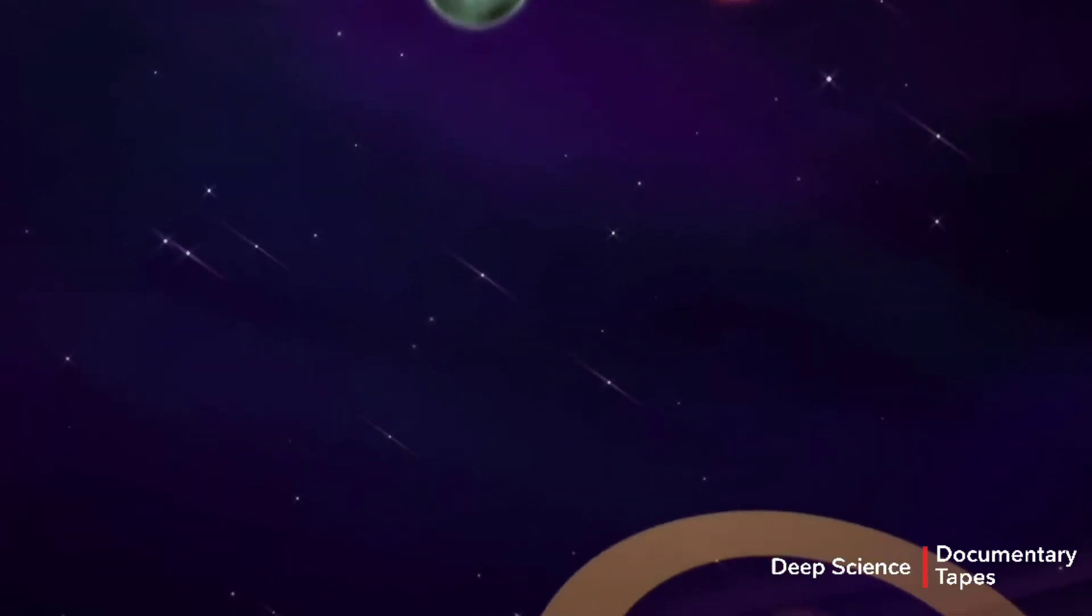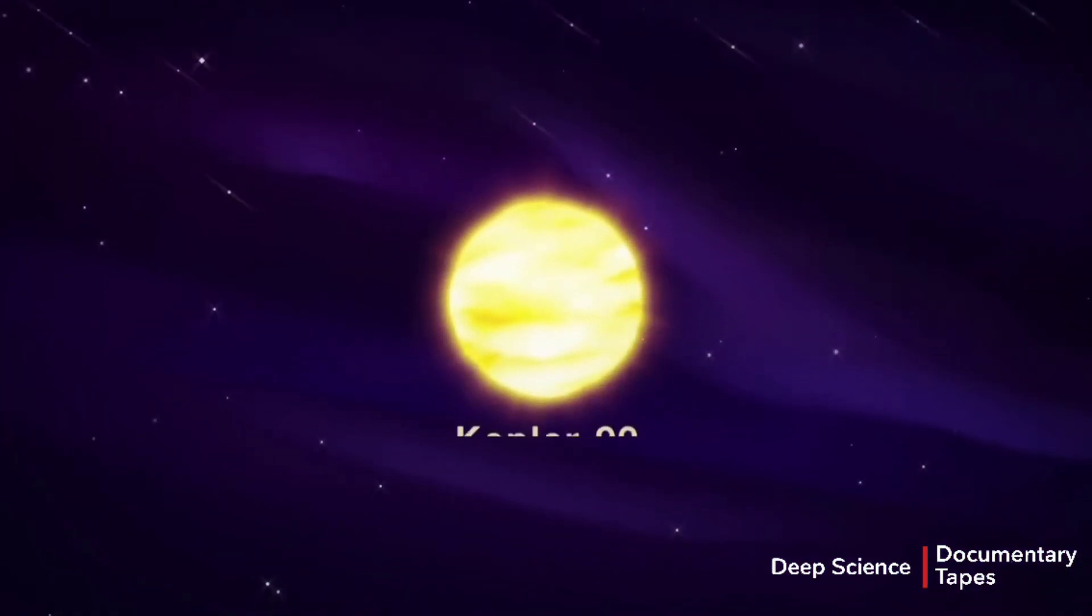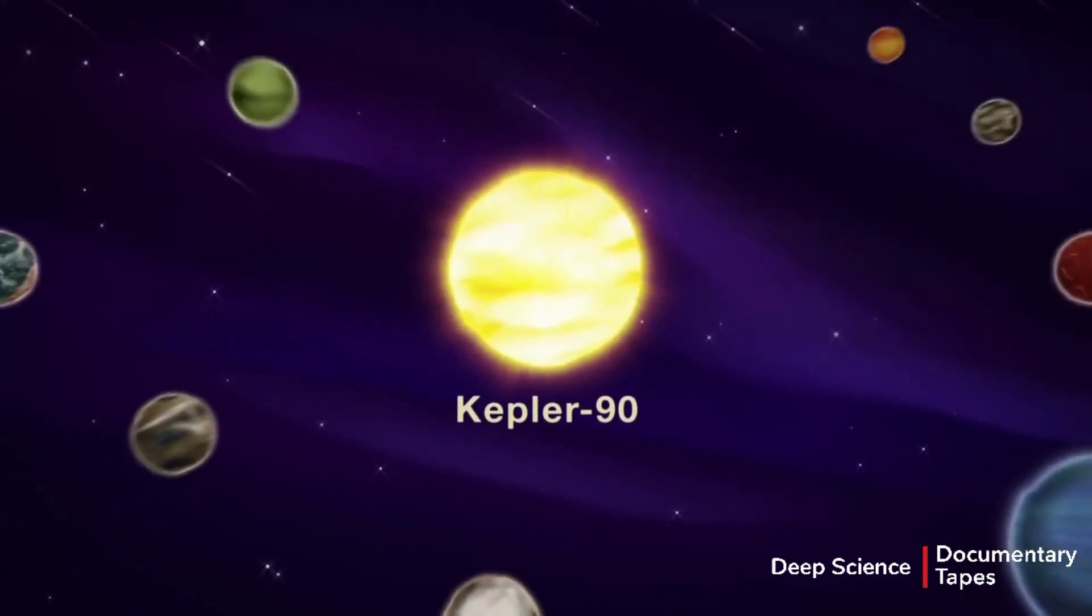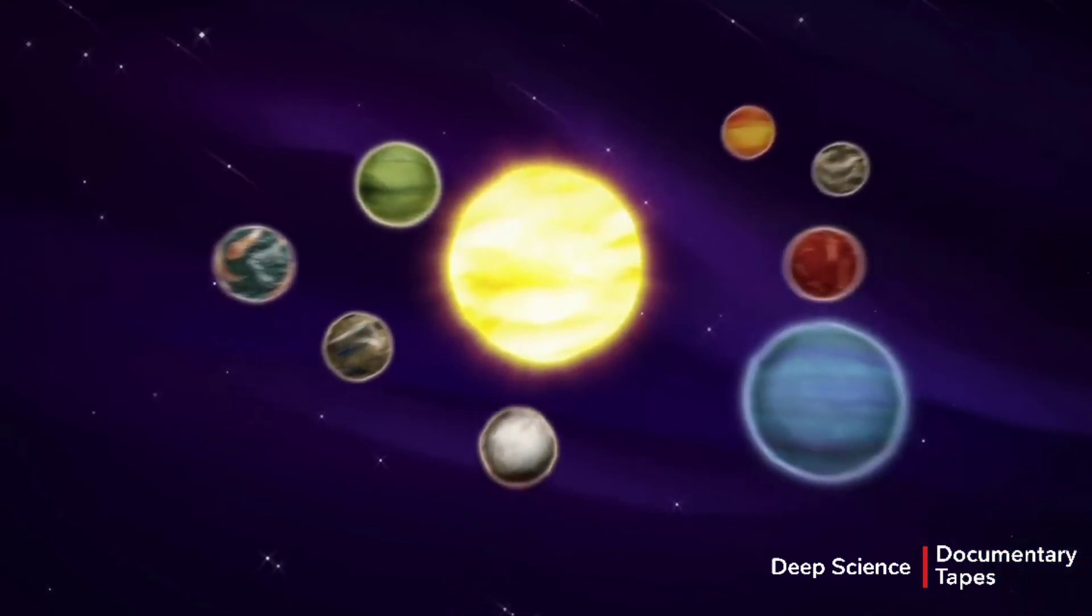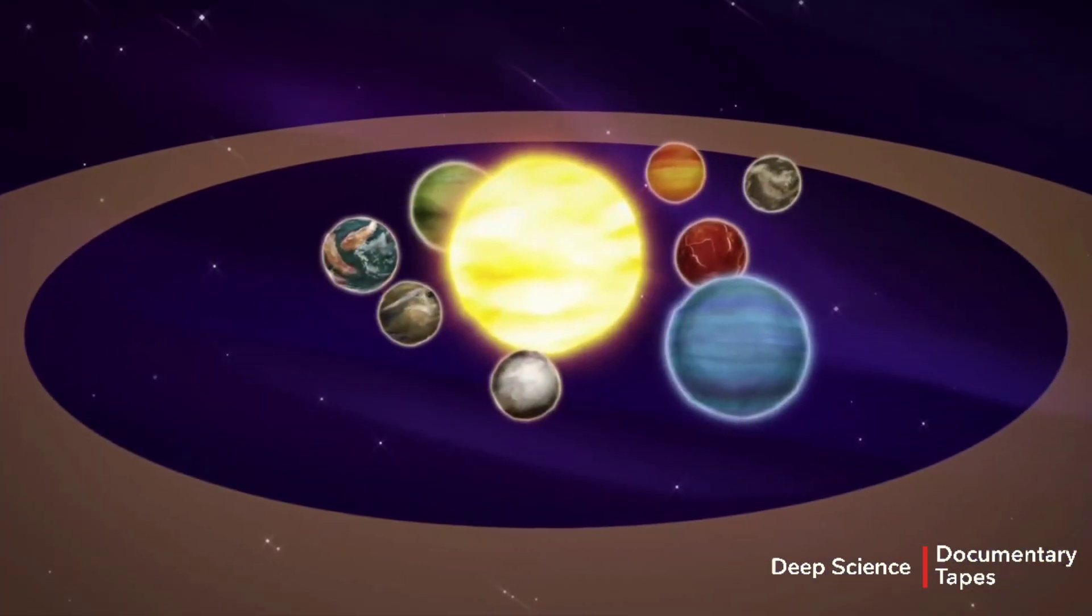So every star has a habitable zone, but that doesn't mean there will be planets there. For example, the star known as Kepler-90 is similar to our sun, and it too has eight planets. But they're all huddled super close to the star, well inside of the habitable zone.